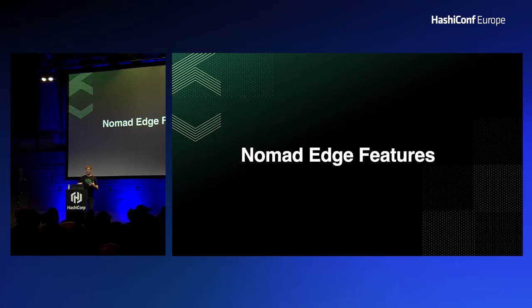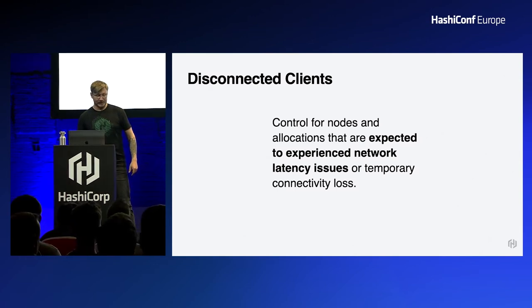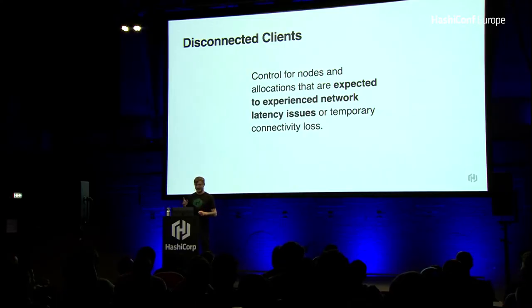So what new features were added in Nomad 1.3 to help with edge work? The features I'm going to discuss were both directly and indirectly created for edge workloads. The first — if you were here this morning you might have seen this — is disconnected clients. The previous heartbeat failure model was something you had no control over. Disconnected clients gives operators a way to control that failure model. It works by adding two new states to Nomad, and props to Derek and Tim for their work on this.